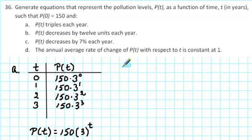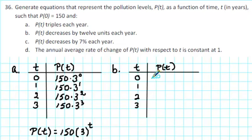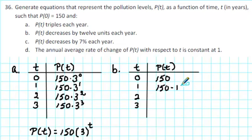For part b, we're given that p of t decreases by 12 units each year. So let's use the same strategy: make a table of values, look for a pattern, and then write the equation. The initial pollution level is still 150, so we fill in 150 in the first row. This time p of t decreases by 12 units each year, so after one year the pollution level will be 150 minus 12.